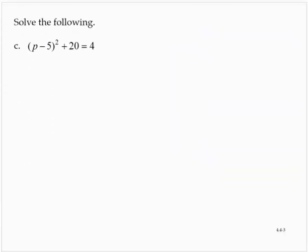Exercise c. We are asked to solve p minus 5 squared plus 20 is negative 4. I will try to isolate this variable quantity squared. I will subtract 20 from both sides. And so then we would have p minus 5 squared is equal to negative 16.